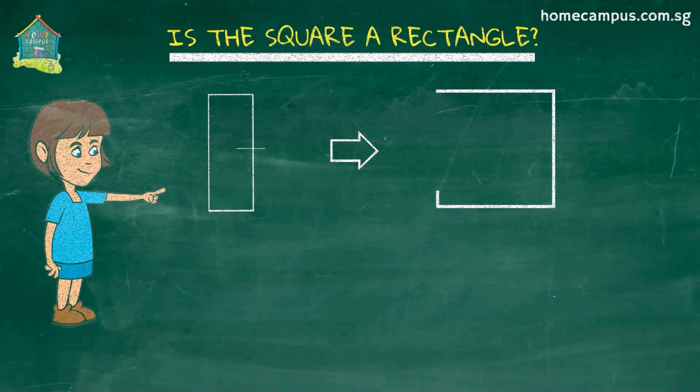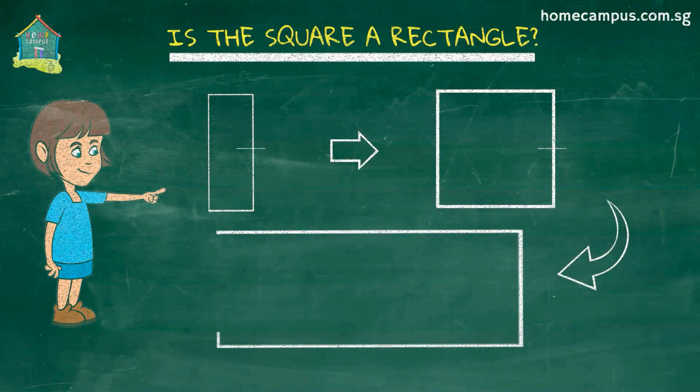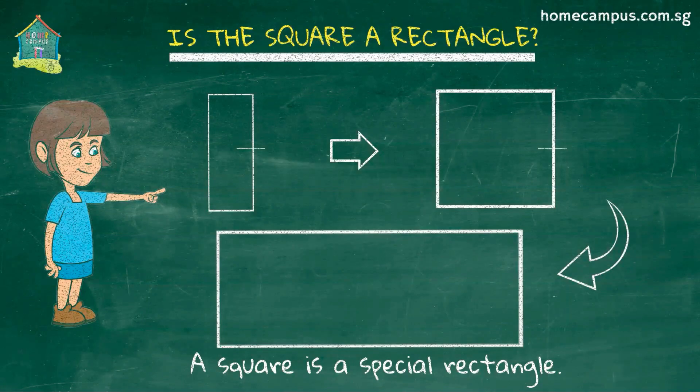The rectangle changes to a square because now all its sides are equal in length. She continues pulling the side and the square changes to a rectangle again. So a square is a special rectangle in which all sides are of equal length.